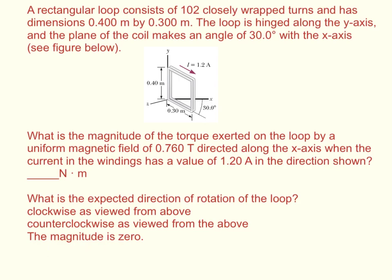We know that the torque is equal to B I A N sine theta. That's the magnetic field, current, area of the loop, and number of turns.